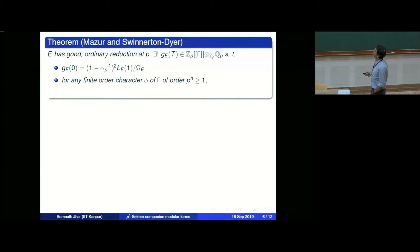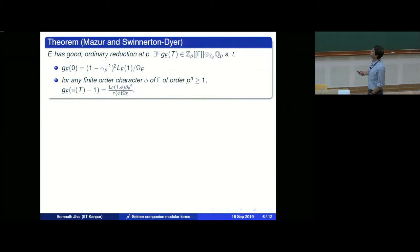More generally, for any finite order character φ of order p^n > 1, we have that g(φ(t)−1) interpolates these special values: the L-value at 1 divided by the Gauss sum, where α and β are the roots of x² − a_p·x + p. This p-adic L-function was constructed by Manin-Vishik-Amice-Vélu.